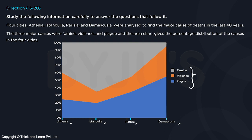Since this is an area chart, we can see that for city Athenia, 25 percent of overall deaths were due to plague. From 25 to 60 is 35 percent, so 35 percent was due to violence, and the remaining 40 percent was due to famine. We can similarly calculate for cities I, P, and D.